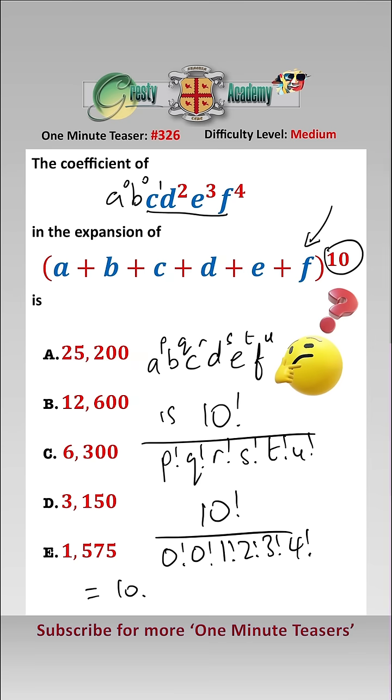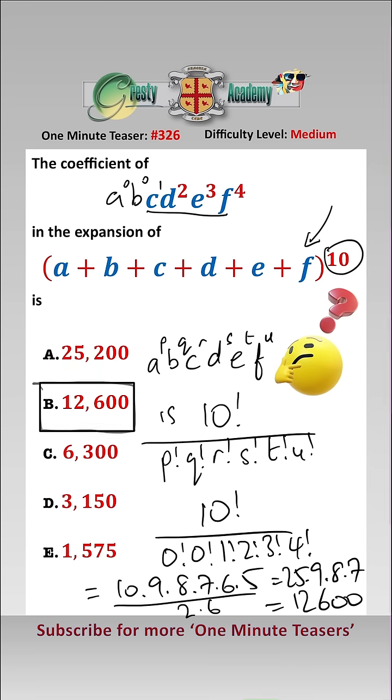which equals 10 times 9 times 8 times 7 times 6 times 5 over 2 times 6, which simplifies to 25 times 9 times 8 times 7, which is 12,600, which is answer B.